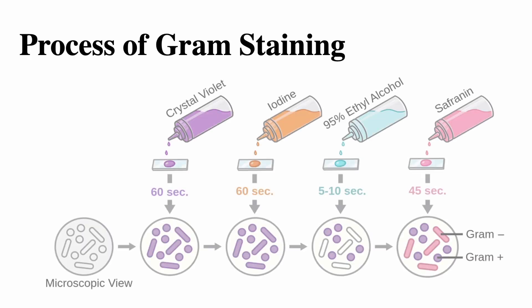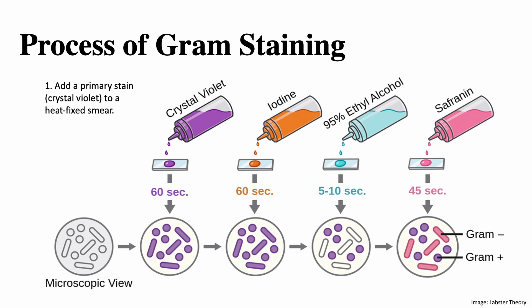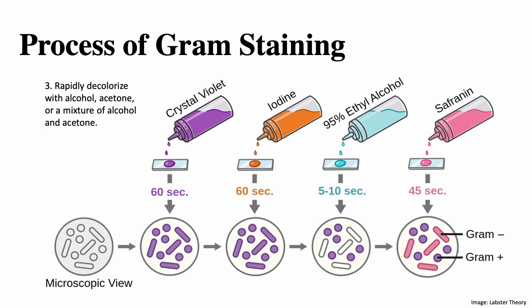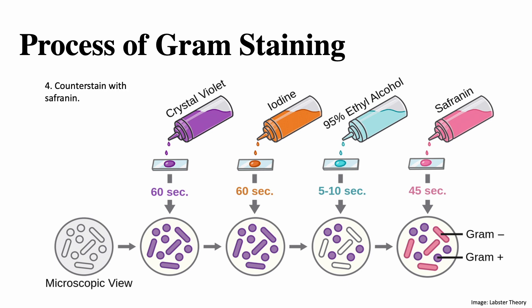The process of gram staining. The American Society for Microbiology states that gram staining requires four basic steps. They include: adding a primary stain called crystal violet to a heat-fixed smear; adding a mordant called gram's iodine; rapid decolorization with alcohol, acetone, or a mixture of alcohol and acetone; and counterstaining with safranin.